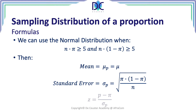The next thing we have to do is calculate the z value to calculate the percentages. The z value is based on the same principle as before: p minus pi divided by sigma p, where p is the proportion found in the sample.